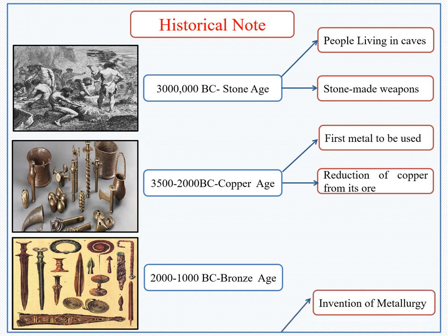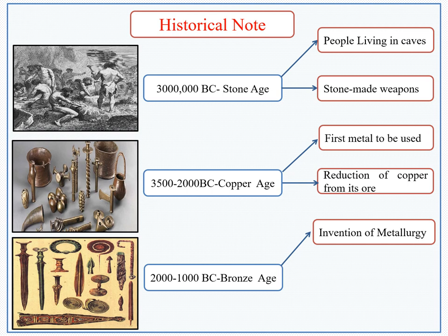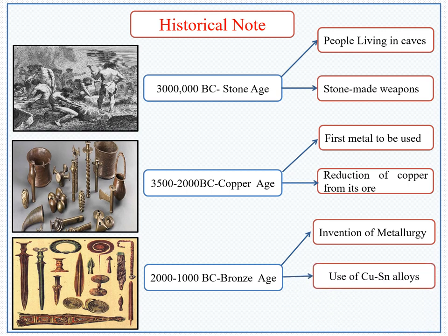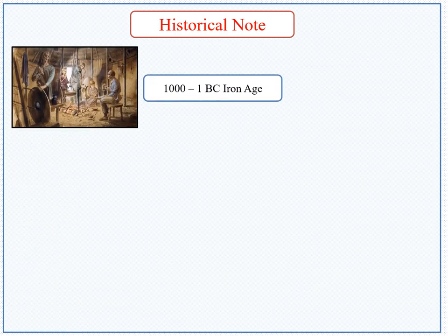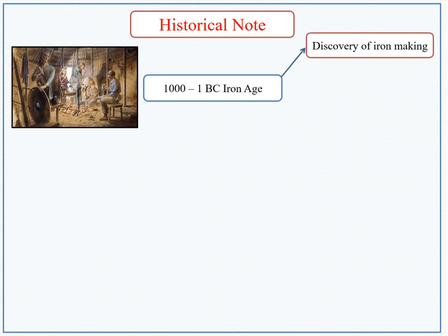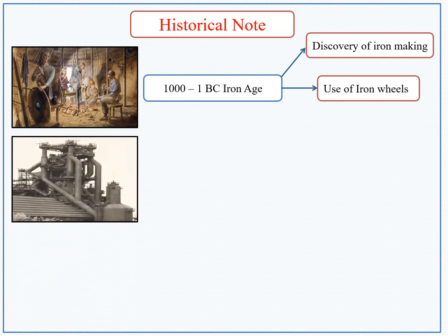The Bronze Age lasted from 2000 to 1000 BC. This was the actual period where metallurgy came into existence, and people started using alloys of copper. Moving to the next age, the Iron Age: its existence was from 1000 to 1 BC. In this age, the iron-making discovery was made and iron wheels were used.